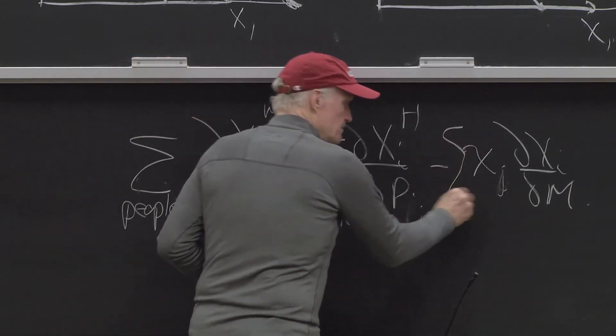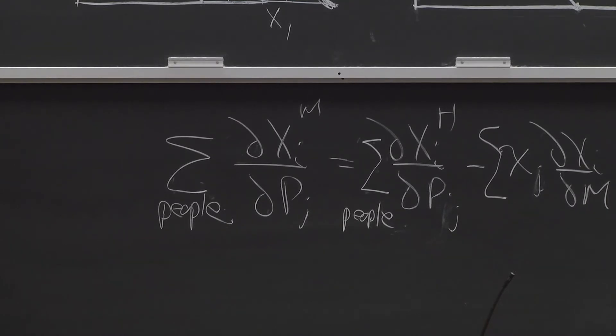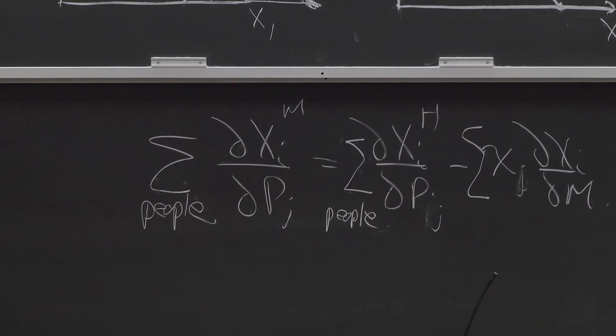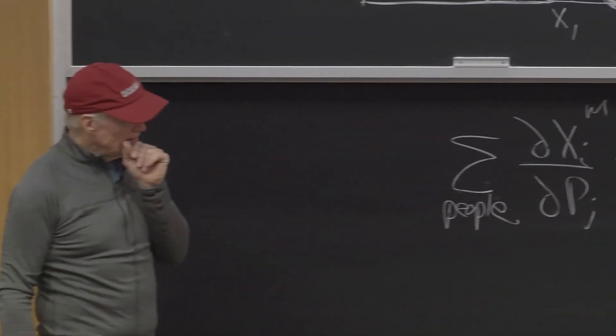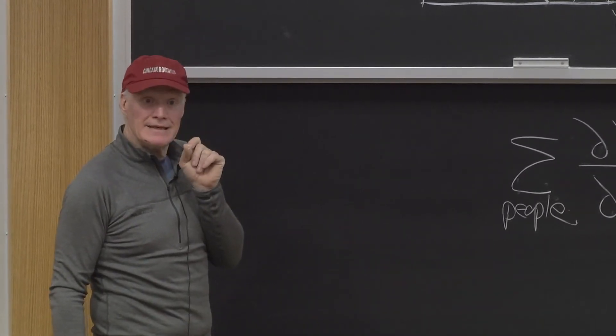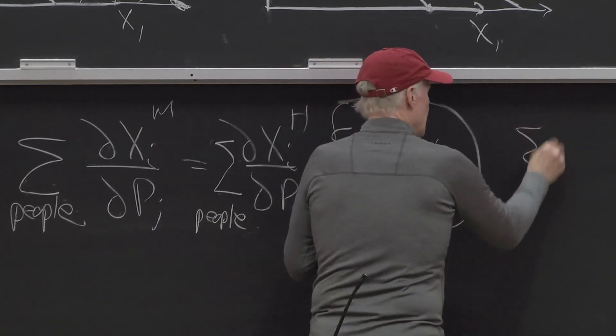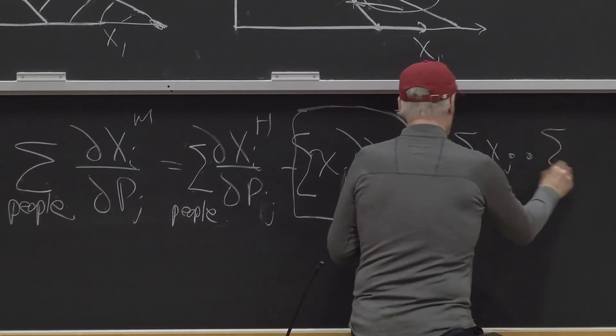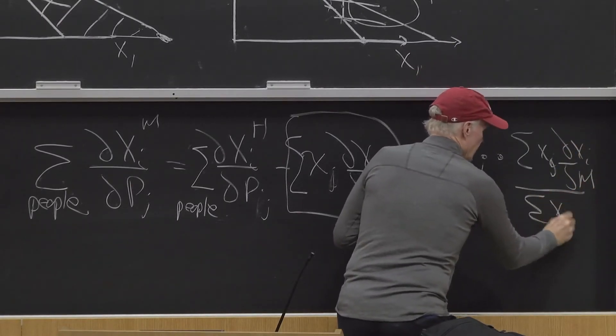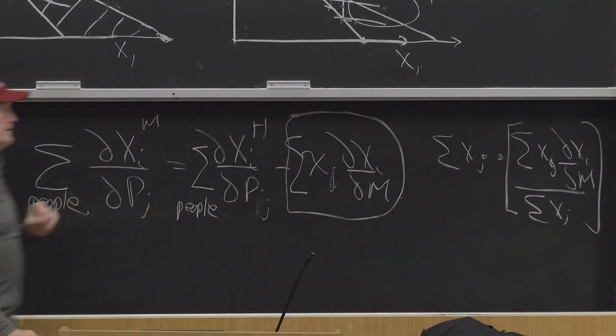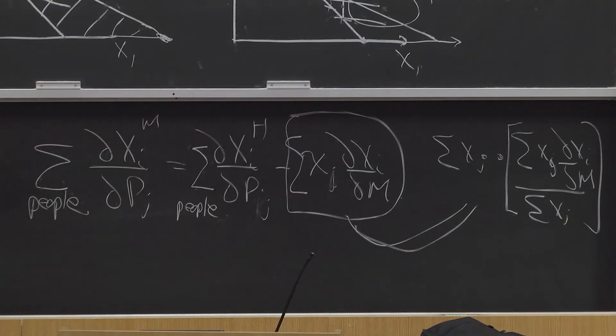So what happens when I come to this term? Is that an income effect? It is. You could rewrite this term. Let me write this term in a nice way. I could write this the sum of the xj times the sum of the xj partial xi partial M divided by the sum of the xj. That's what that term is. Multiply and divide by that.